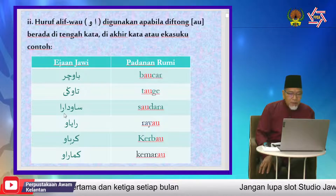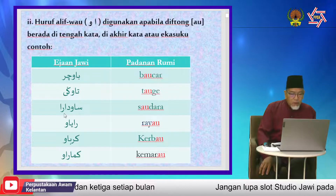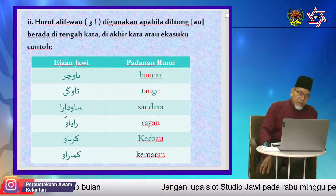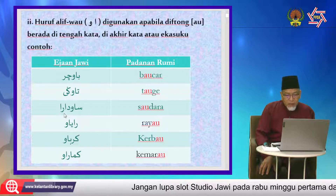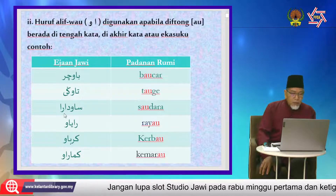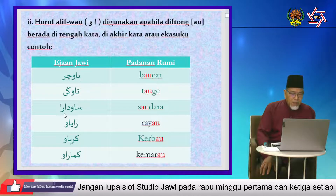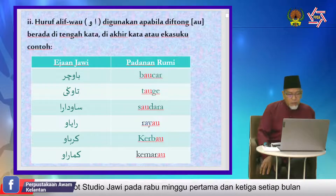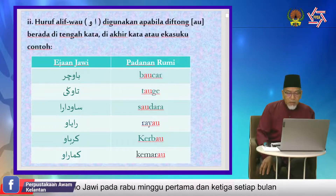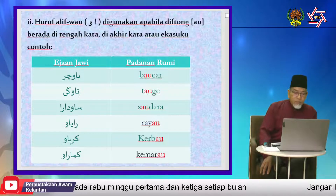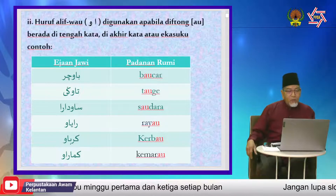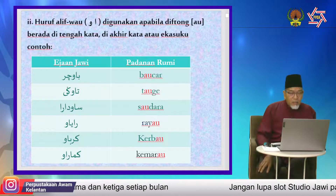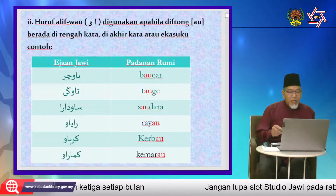Perkataan 'kerbau': ejaan lama ka, ra, ba, wau sahaja — K-I-R-B-A-U, kerbau. Perkataan 'kemarau': ka, mim, alif, ra, alif, wau — K-E-M-A-R-A-U, kemarau. Ejaan lama ka, mim, alif, ra, wau sahaja. Satu lagi perkataan 'kalau': ejaan sekarang kena ada alif — ka, alif, lam, alif, wau. Dalam kitab-kitab lama, ejaan 'kalau' ditulis ka, lam, wau sahaja. Sekarang kena ada alif. Banyak lagi perkataan seperti ini, saya pilih beberapa sebagai contoh sahaja.